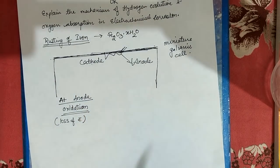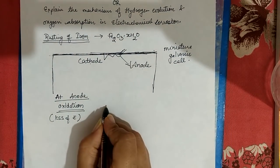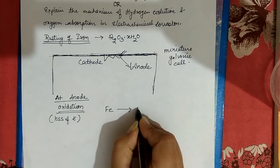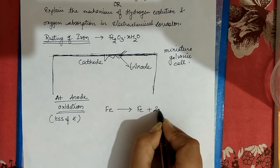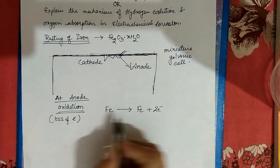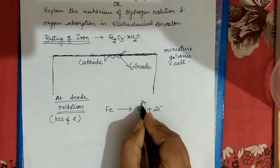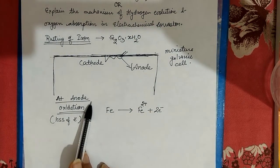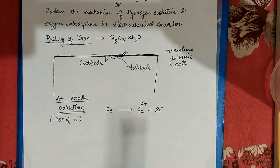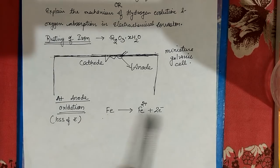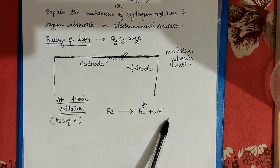At the anode we have iron — the metal surface. Iron, Fe, will lose two electrons. When any metal loses electrons, it gets a positive charge. Since it loses two electrons, it becomes Fe²⁺. So the reaction at the anode is: Fe → Fe²⁺ + 2e⁻. This applies not just to iron but to any metal undergoing corrosion.